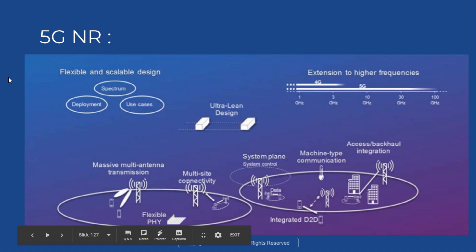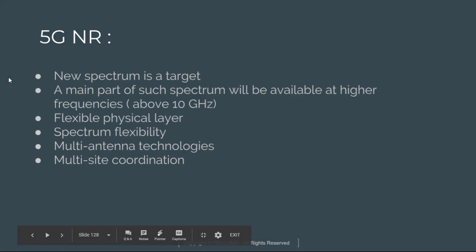This is 5G new radio deployment. Spectrum is the target, and the main part of such spectrum will be available at higher frequencies. We have flexible physical layer design, meaning flexible numerology. There is also spectrum flexibility, which includes spectrum sharing, unlicensed, shared license, and network sharing concepts.